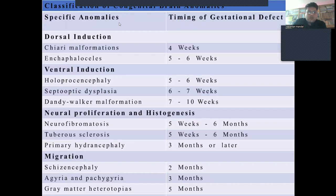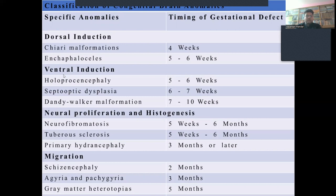There is a table showing classification of congenital brain anomalies. On the left-hand side are the specific anomalies; on the right-hand side is the timing of the gestational defect. For dorsal induction, Chiari malformations manifest by 4-5 weeks, while encephaloceles manifest by 5-6 weeks. For ventral induction, holoprosencephaly manifests by 5-6 weeks, septo-optic dysplasia by 6-7 weeks, and Dandy-Walker malformation by 7-10 weeks. Neural proliferation disorders like neurofibromatosis manifest from 5 weeks to 6 months. Primary microcephaly manifests at 3 months or later. Migrational defects like lissencephaly manifest at 2 months, agyria or pachygyria at 3 months, and gray matter heterotopias at 5 months.